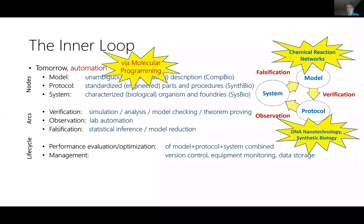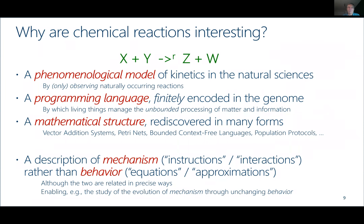All the arcs — falsification, verification, observation — should be automated as much as possible, with life-cycle questions about managing process, versions, and so on. What I want to concentrate on today is this inner cycle in a specific situation: chemical reaction models. The models will be chemical systems, the protocols will be DNA protocols to manipulate DNA strands, and we want to achieve integration between models and lab protocols through what I'll describe as molecular programming.